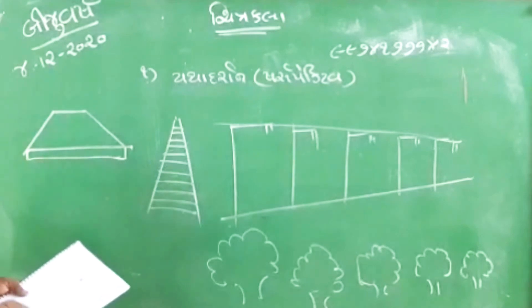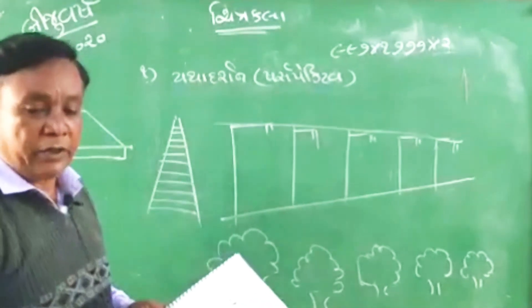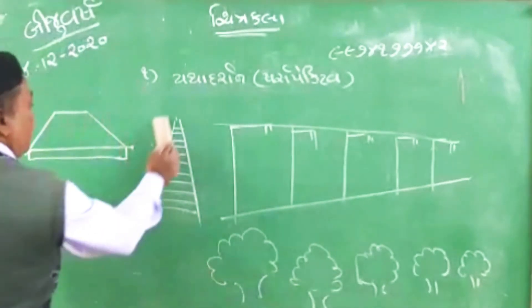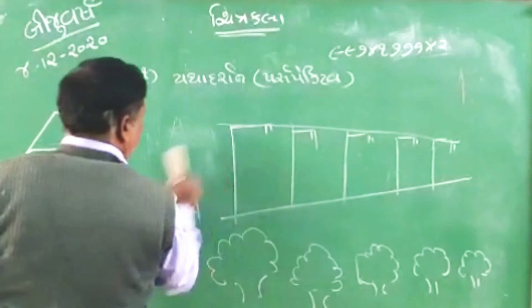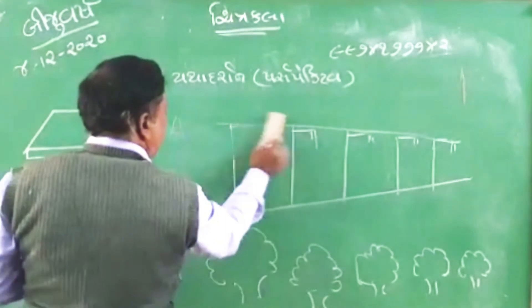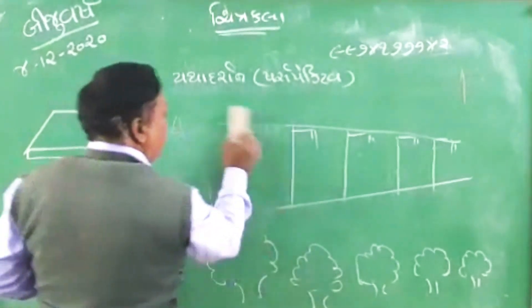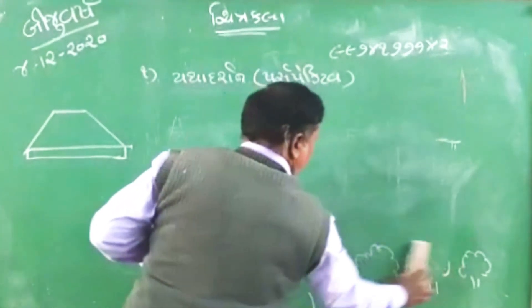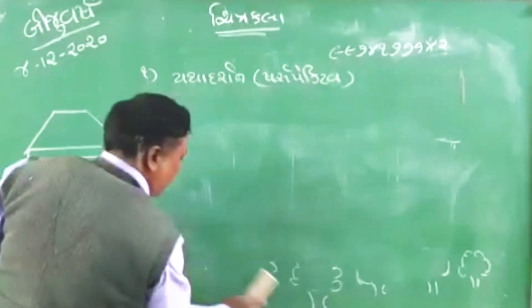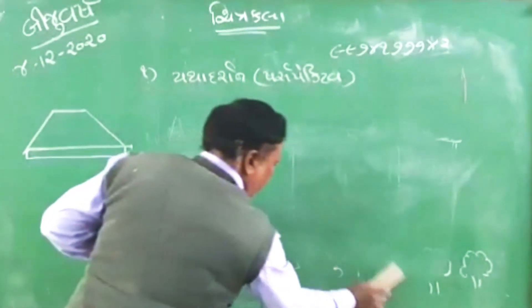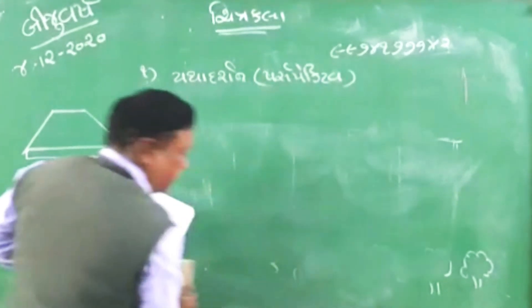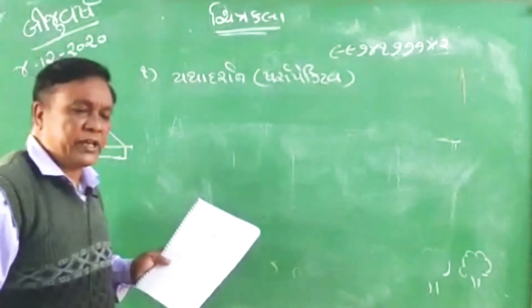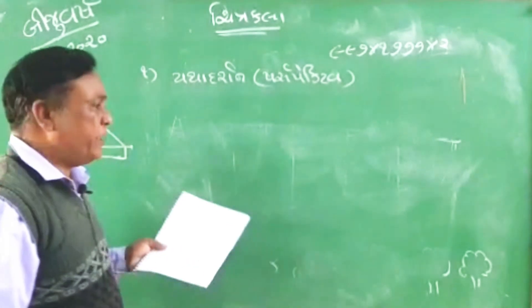If you have a drawing of the material, you can try to draw the material. This is the part of the material. Today the material is big. The material of the material is big.